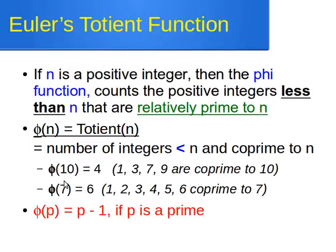For example, phi of 7: the numbers 1, 2, 3, 4, 5, and 6 are all co-prime to 7. I hope you remember what co-primeness means — two numbers are co-prime when their greatest common divisor (GCD) is 1. And always remember that if p is a prime number, then phi of p is just p minus 1.